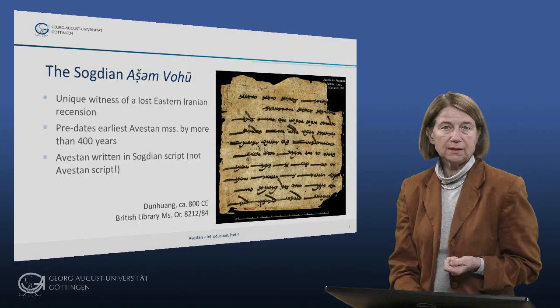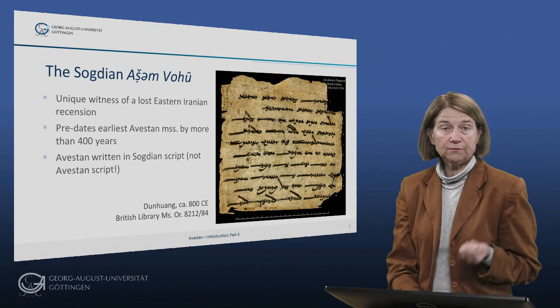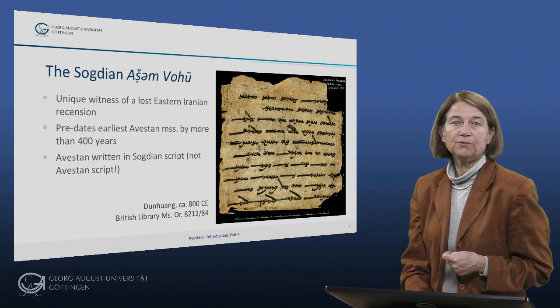We shall look at the Sogdian Ashenvohu again when we talk about the dialectal features of Avestan in the session on phonology. In the last session we saw how the Zoroastrian priests created the Avestan script artificially. In doing so they borrowed letters from existing scripts, in particular the Pahlavi book script, the Psalter script and the Greek alphabet, and they created new letters by adding diacritic marks to existing ones.